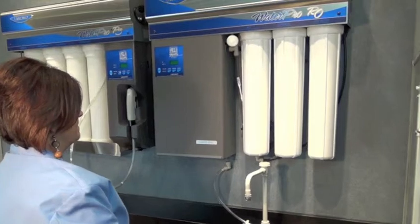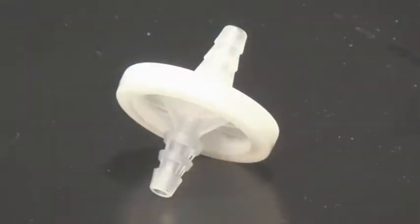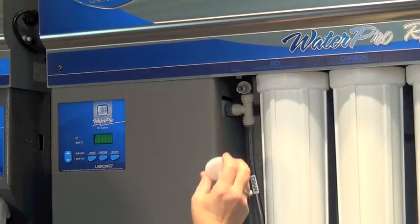To replace the storage tank's air vent filter each year, remove and discard the old filter and press a new filter into the tubing.